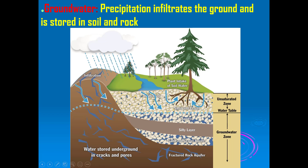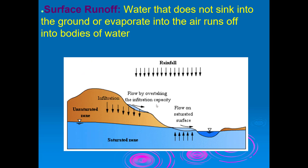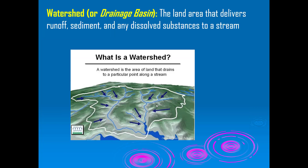Surface runoff is water that doesn't sink into the ground or evaporate — it's the stuff that carries chemicals from one place to another. A watershed or drainage basin is all of the highest points in a given area; since gravity drives water flow, it runs from the highest areas to the lowest. In environmental science we care about this because water is a universal solvent and picks up everything as it runs down to rivers at the bottom of those slopes.